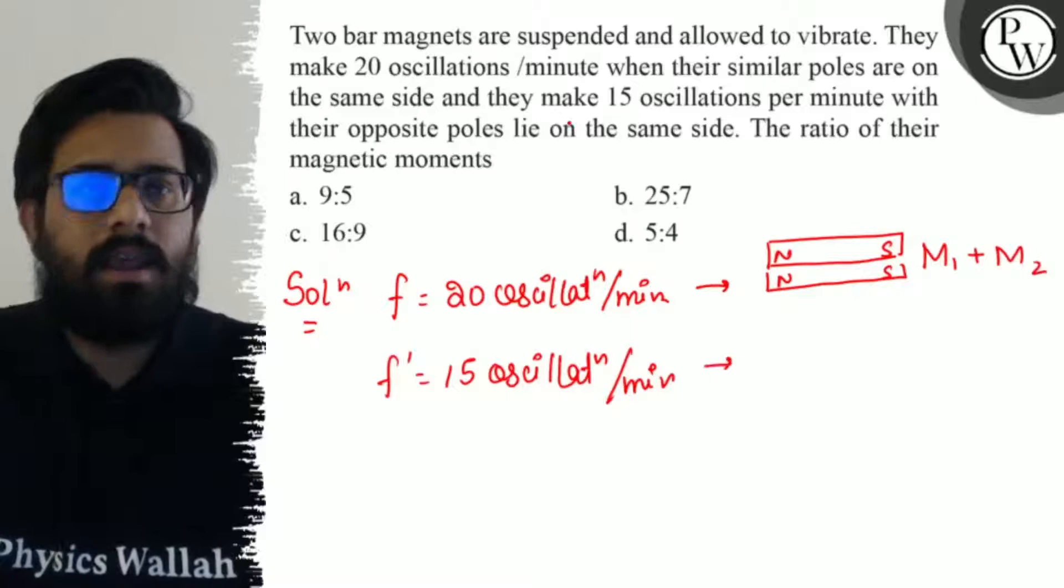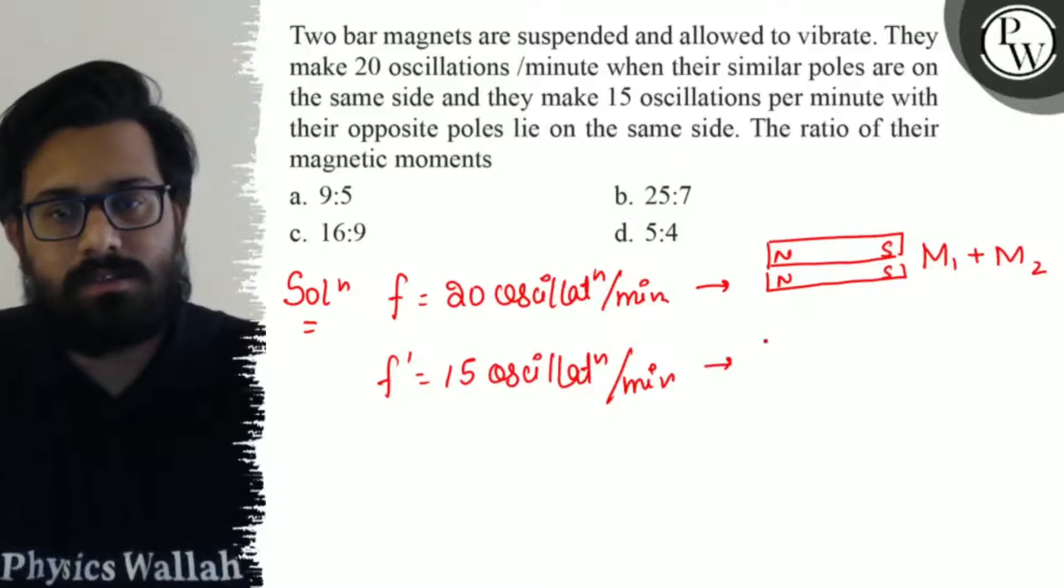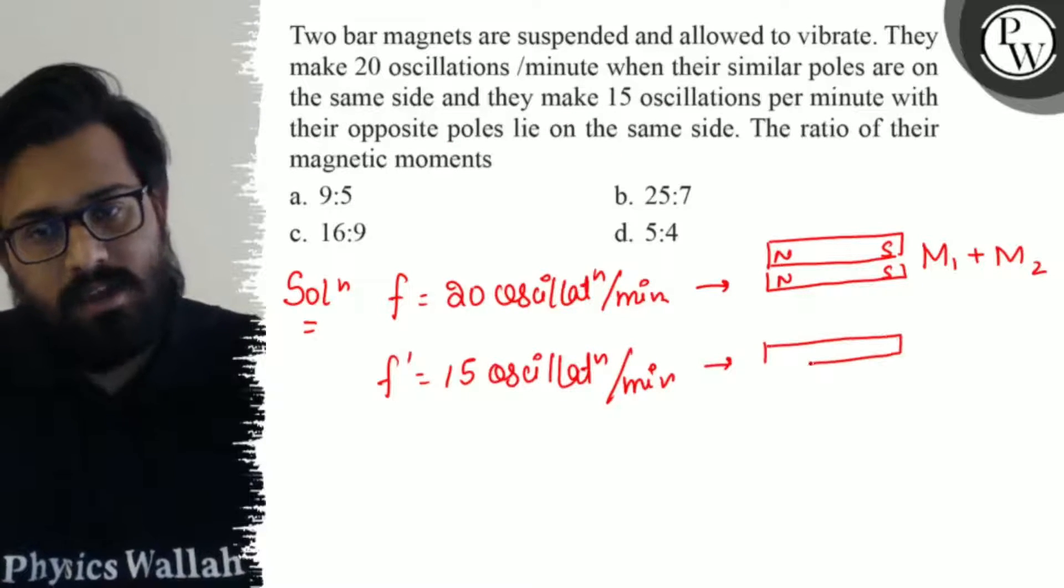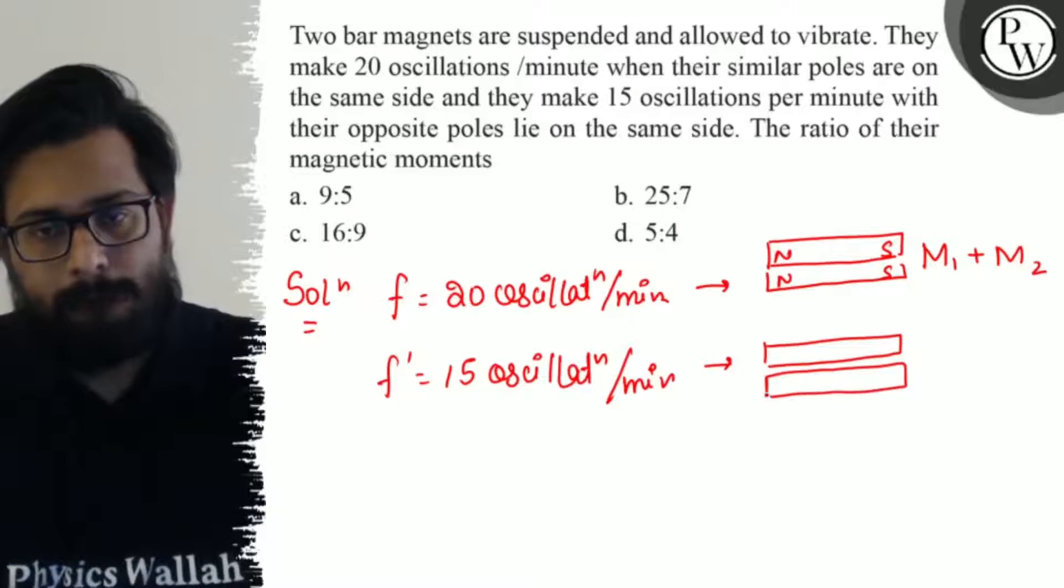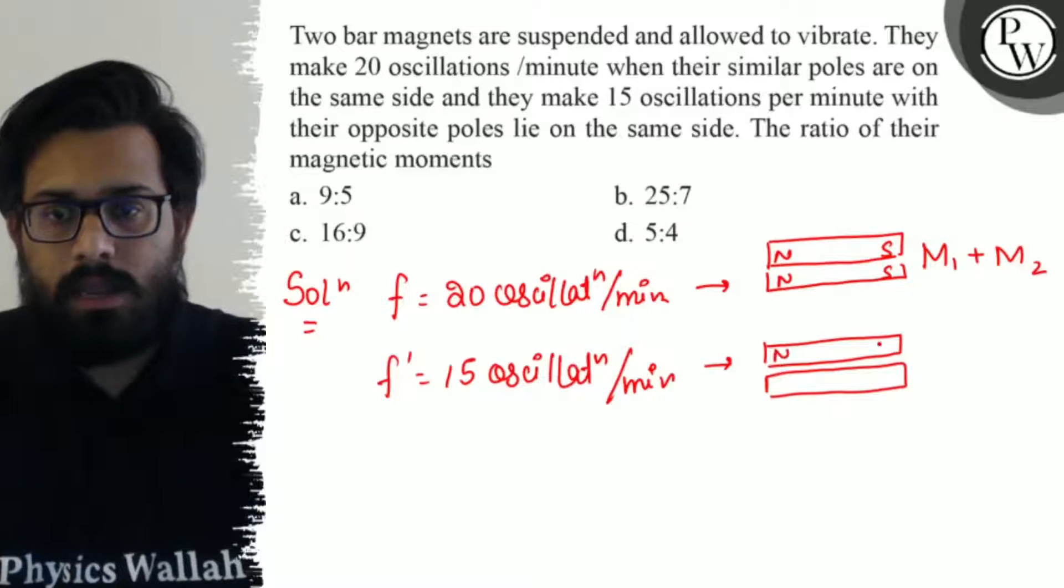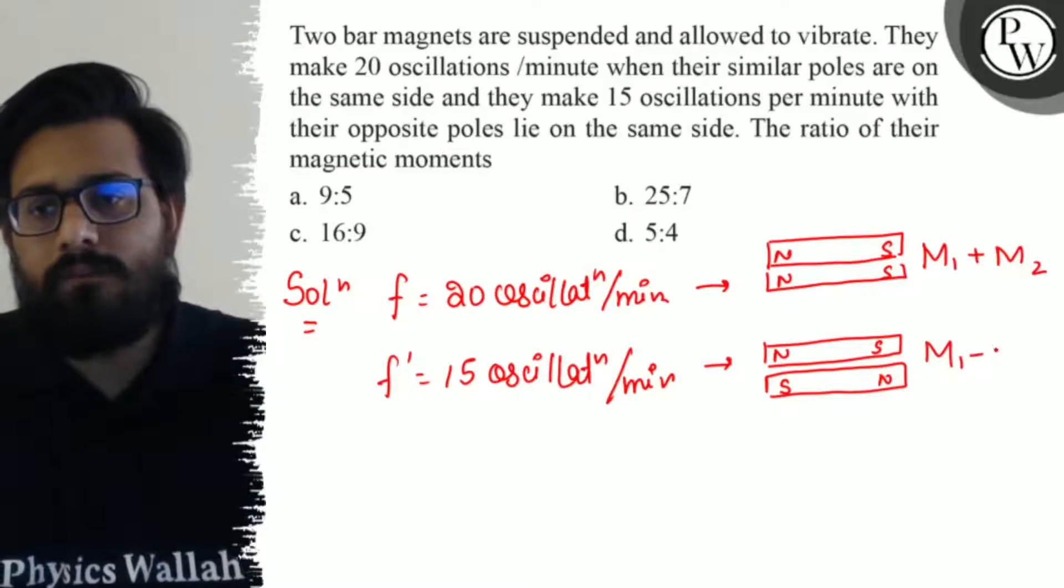In the second case when opposite poles lie on the same side, that means this scenario can be like this - north pole here, south pole here, south pole and north pole. In this case magnetic moment is about M1 minus M2 because the direction is opposite.